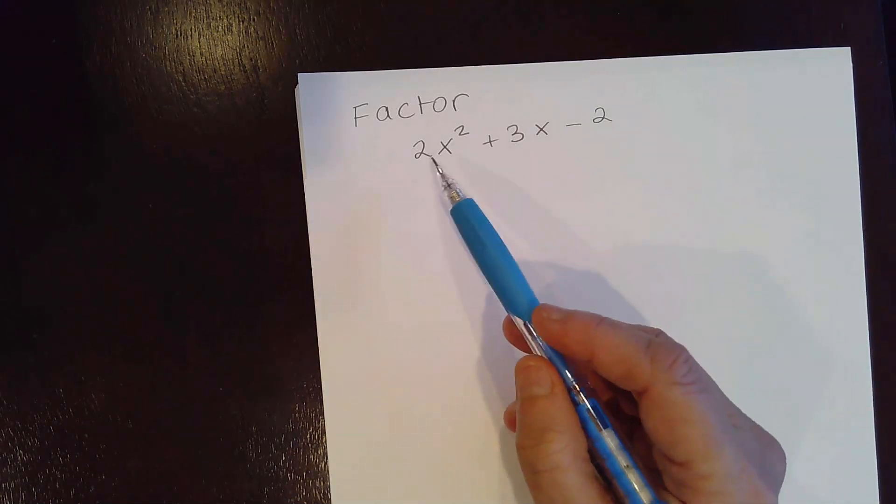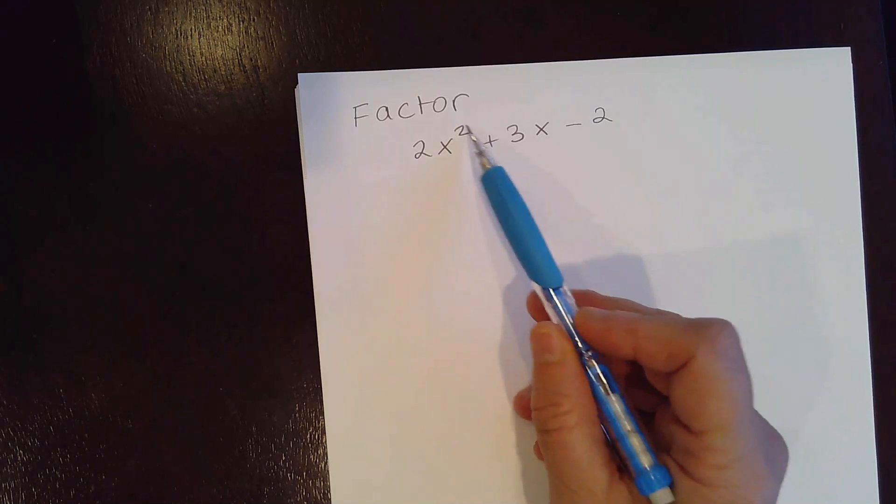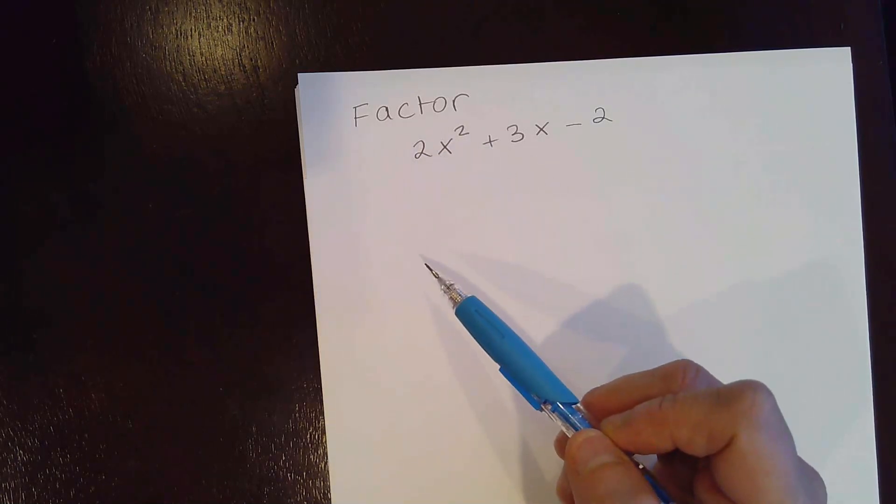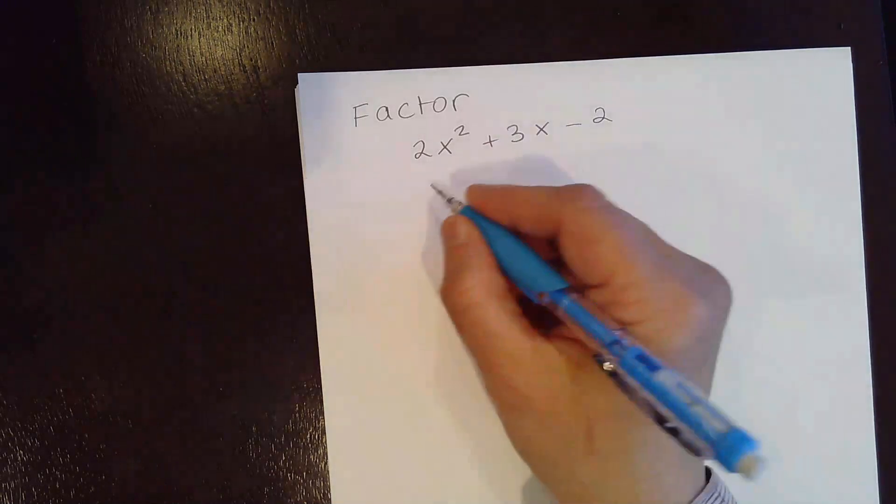If you notice, the first term has a coefficient 2, which is other than 1. How are we going to factor this?